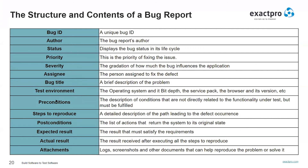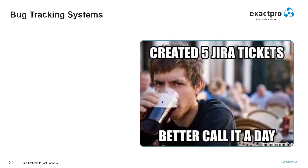Once we raise the bug, we need to track its state somehow. Bug-tracking software platforms allow us to keep our bug reports, their status, and updates on them, as well as quickly find previously raised tickets. You might be familiar with some of them.